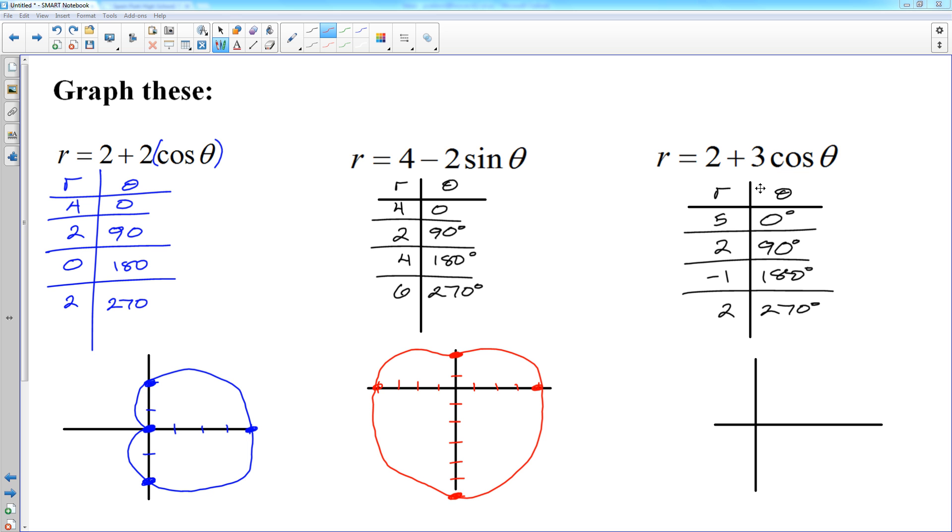And then finally, two plus three cosine theta. Five units in the zero direction. Three, four, five. Two units in the 90 degree direction. Negative one in the 180. Now that means you run away from 180, one unit. And then two units in the 270 degree direction. And this is going to be the one with the loop. Now that point is the tip of the loop. When you have two points on the same side of the origin like that, it comes through the origin. Loop. Come back through the origin. And then there. So that is a blitz of everything polar that you need to know going into calculus. And then we will add to this once we learn more calculus techniques.